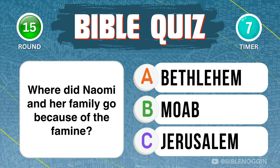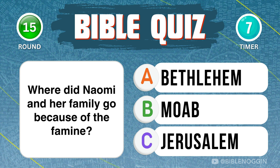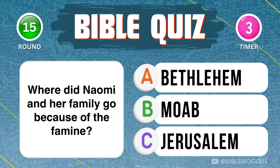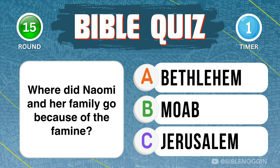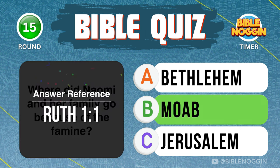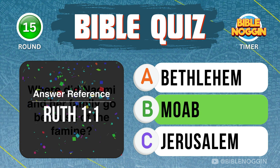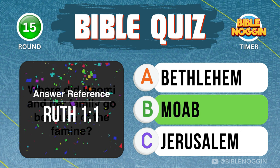Question 15: Where did Naomi and her family go because of the famine? Moab — found in Ruth chapter 1, verse 1.